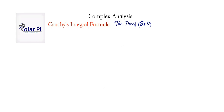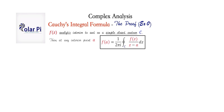Let's state it and get on with the proof. The statement goes like this: if f of z is analytic interior to and on a simple closed contour c, then for any interior point a, f of a is equal to 1 over 2πi times the integral over c of f of z over z minus a dz. The integral is a closed integral because the contour c is a closed contour.